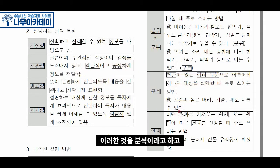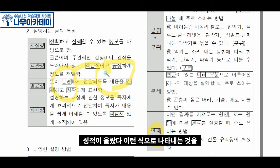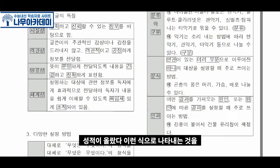이러한 것을 분석이라고 하고, 인과는 원인과 결과입니다. 예를 들어 공부를 열심히 해서 성적이 올랐다, 이런 식으로 나타내는 것을 인과라고 합니다.